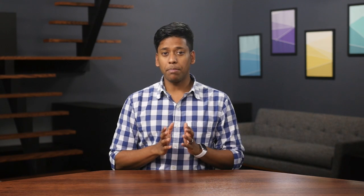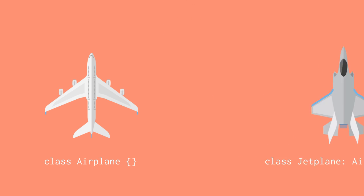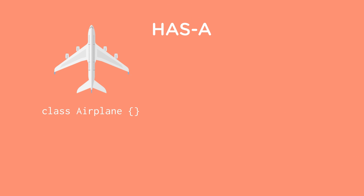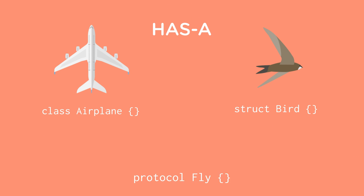We'll start by understanding how to write a basic protocol and how to implement it in our code. We'll then take a step back and look at why protocols are useful and when we need to use them over inheritance when building objects.